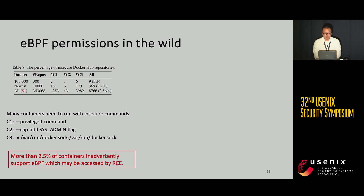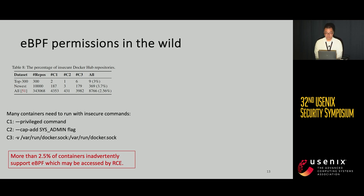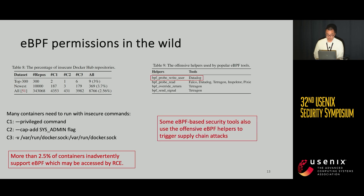We also investigated how many DockerHub repositories need to run containers with eBPF permissions. Three specific commands can enable eBPF in containers, and more than 2.5% of containers use these insecure commands, meaning remote code execution can launch eBPF attacks. We also found that famous eBPF tools such as Datadog also use these offensive eBPF features, meaning users who have enabled all eBPF features for this software may suffer supply chain attacks.